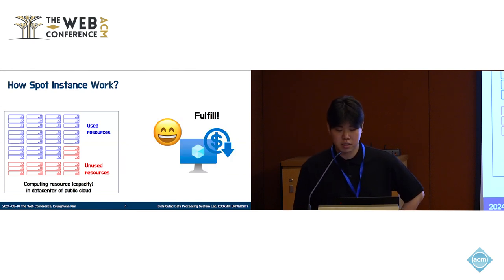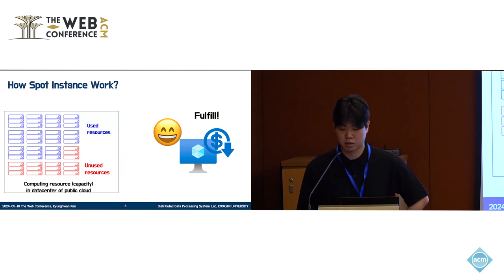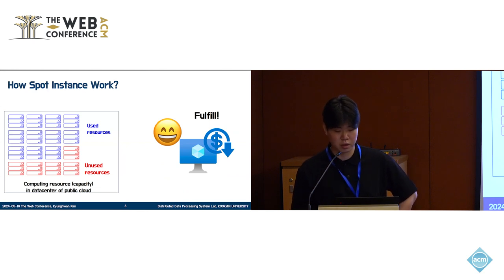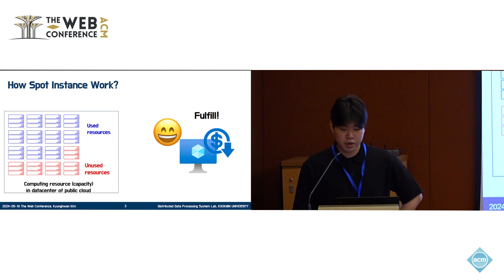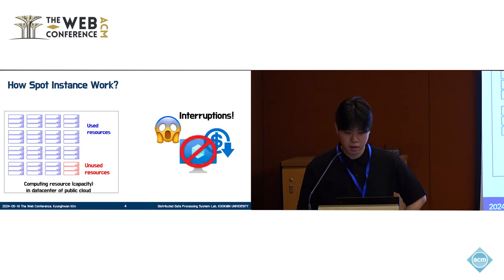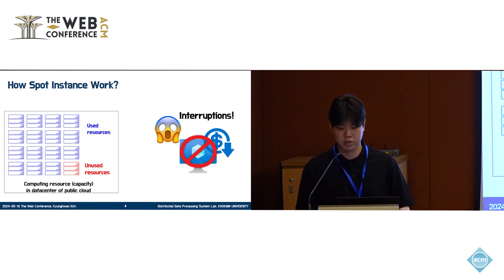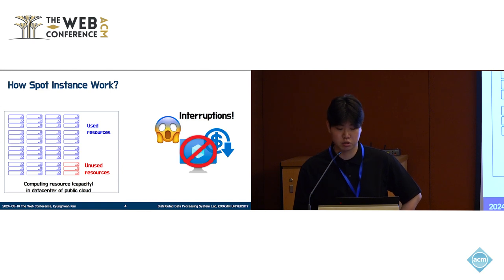So, how does Spot instance work? This figure represents resource capacity of cloud data centers. Here, blue servers represent resources that are in use and red servers represent resources that are not in use. When there are a lot of unused resources, Spot instances can be used. However, if there are not enough unused resources to supply on-demand or reserved instances, Spot instances can be interrupted. Despite the significant cost advantages, such interruptions can make users hesitant to use Spot instances.